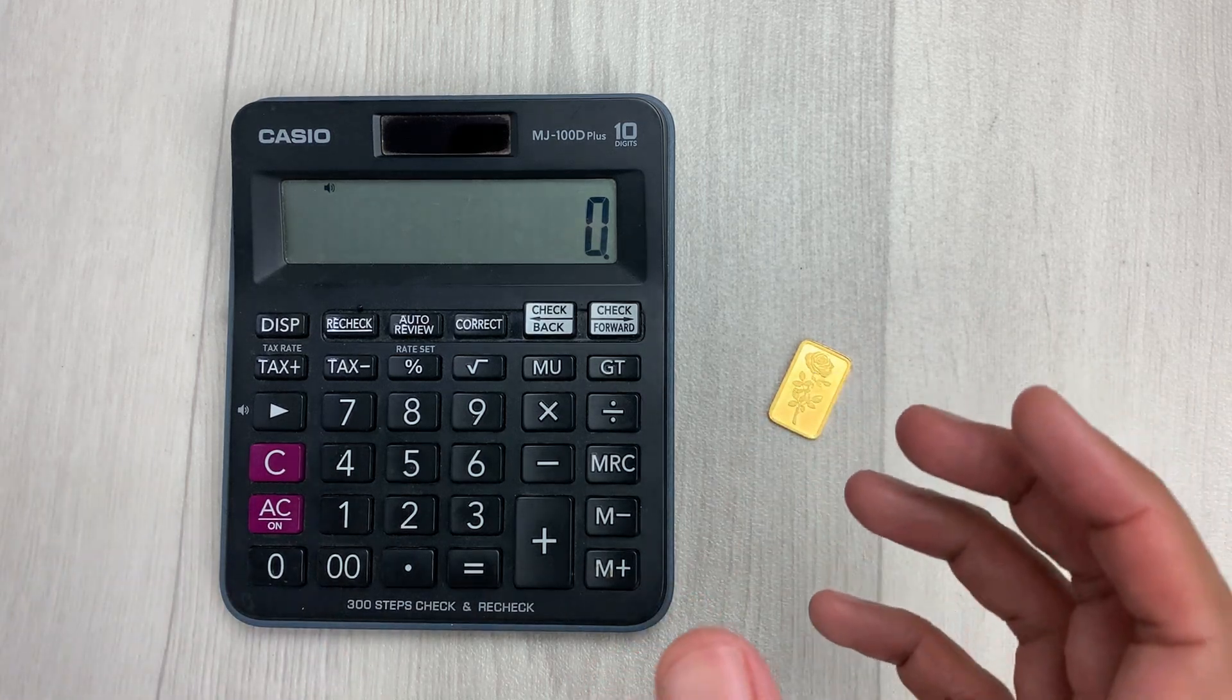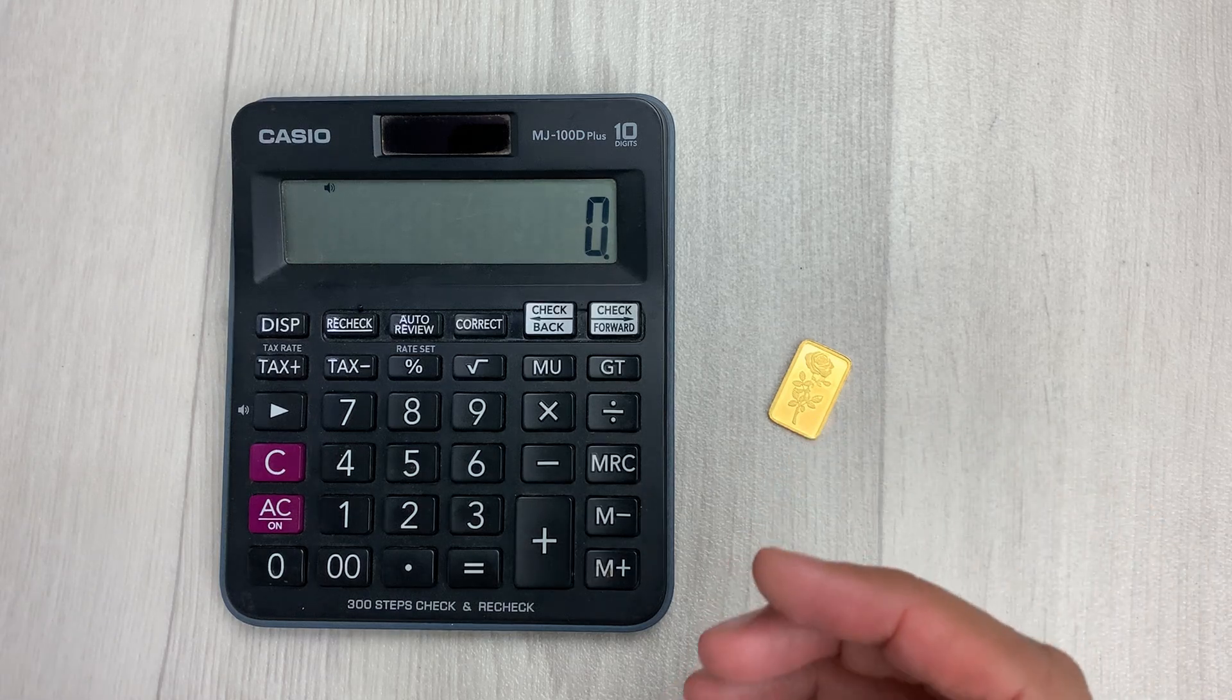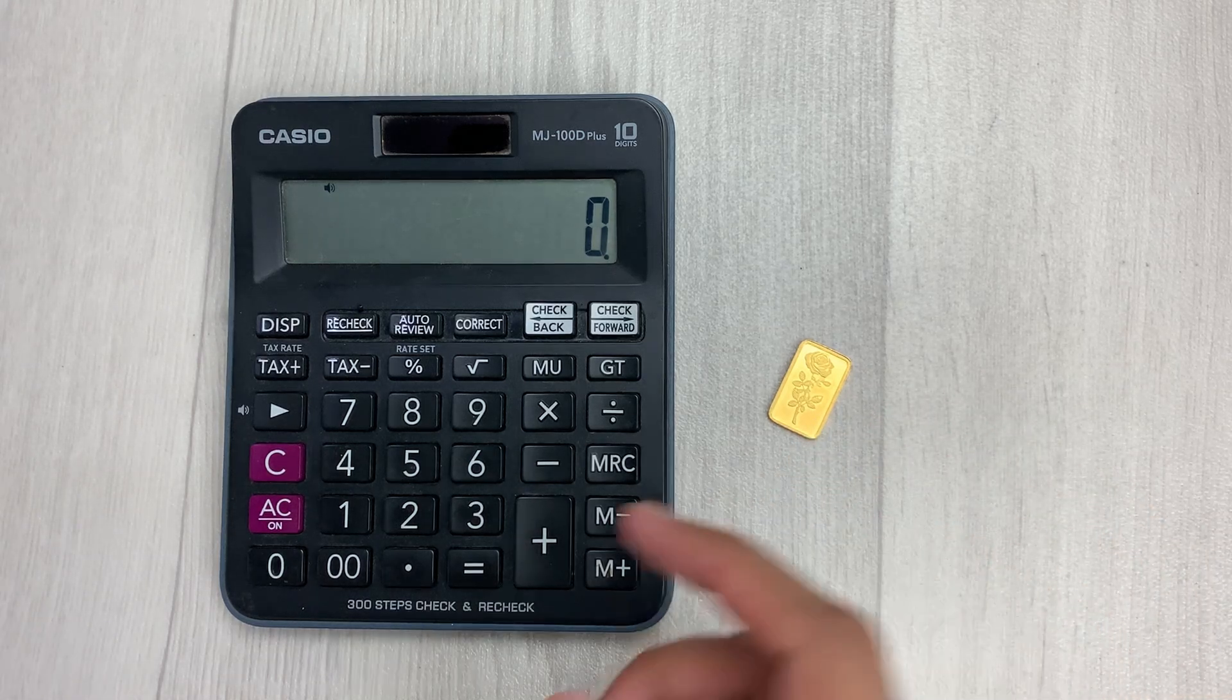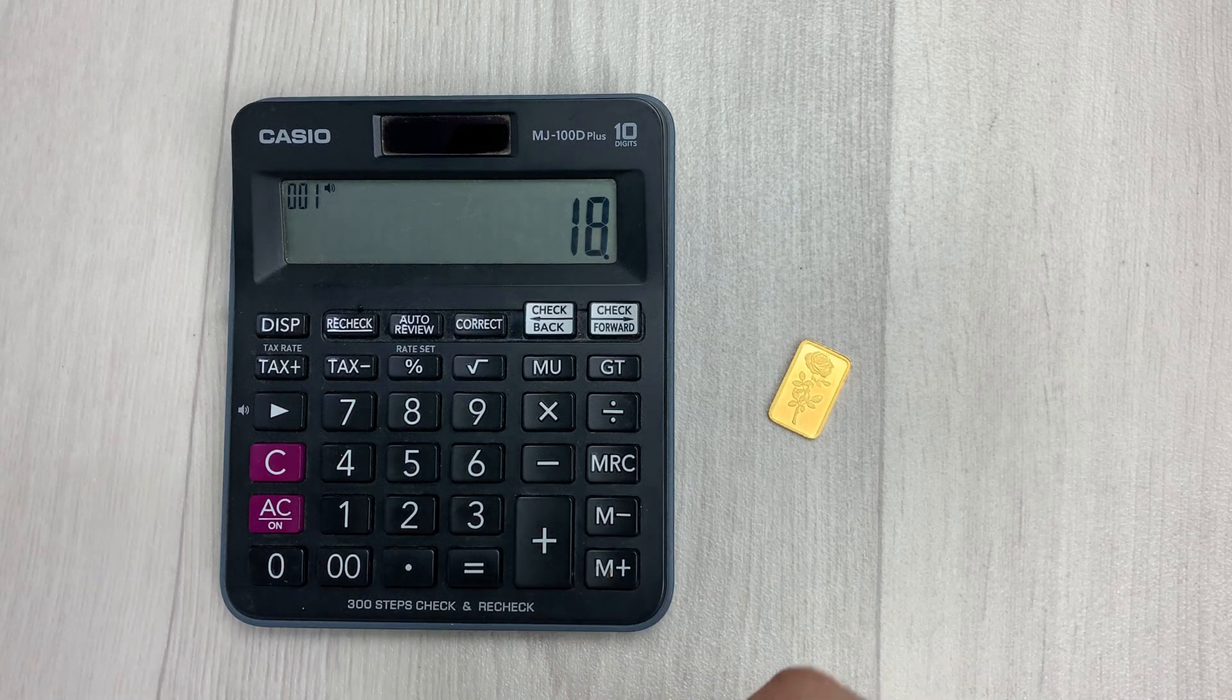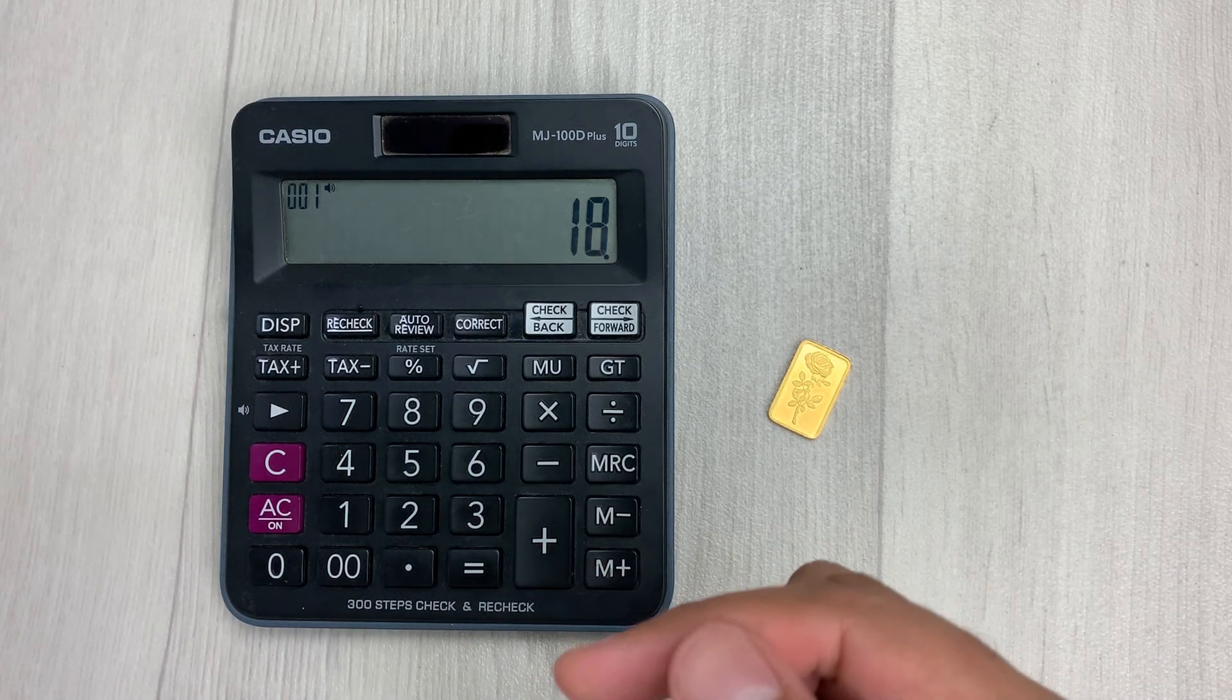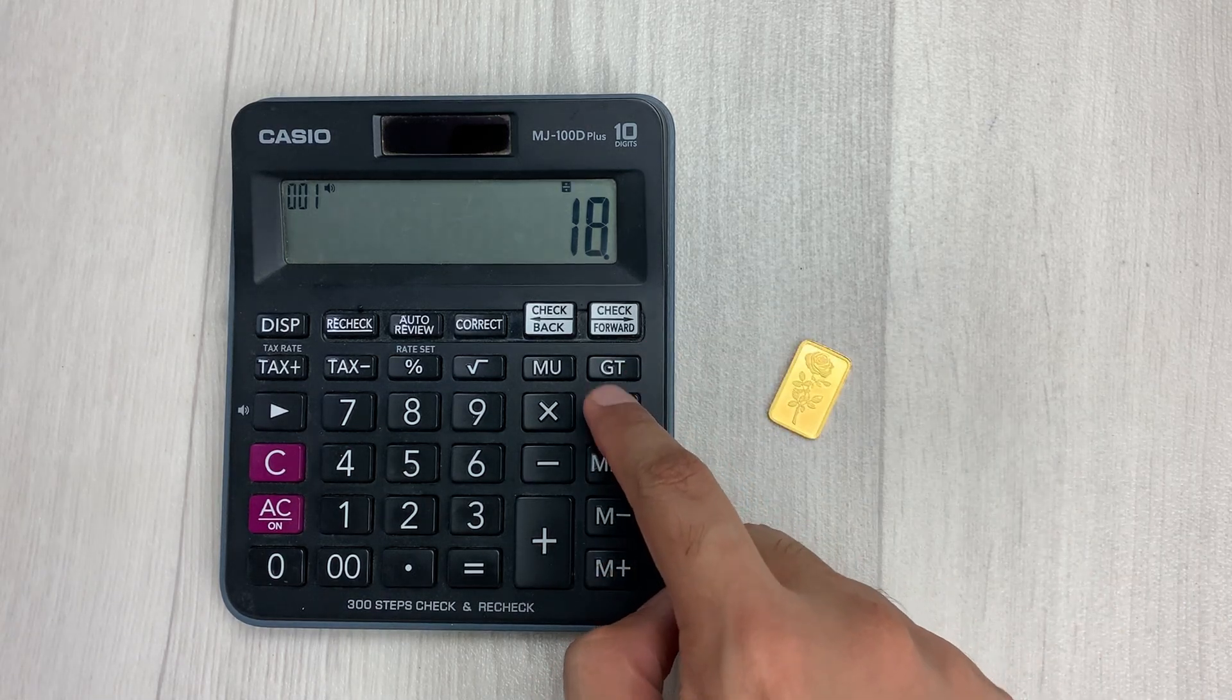For example, you have a piece of jewelry that says it is 18 karat gold. So you have to type 18 on your calculator, and then you always have to divide it by 24. So I will divide it by 24.